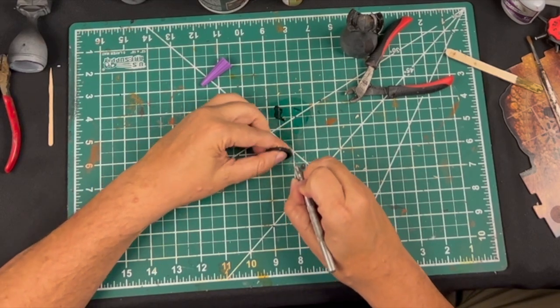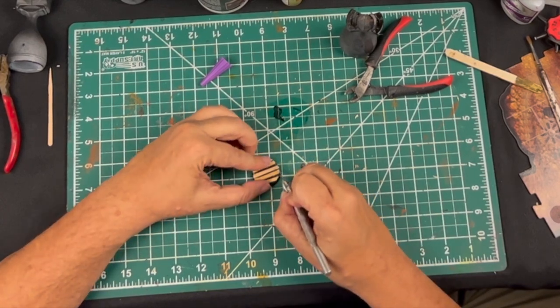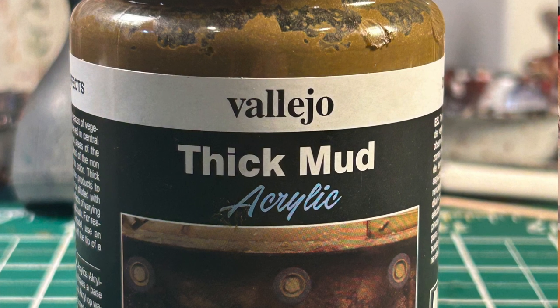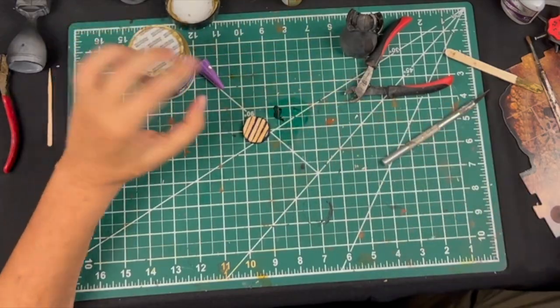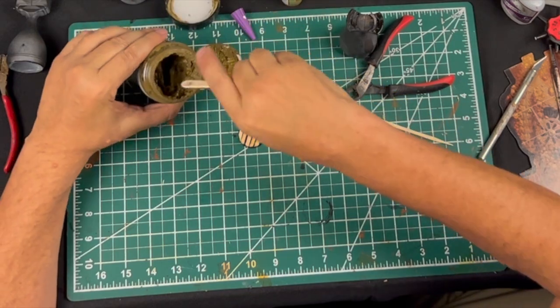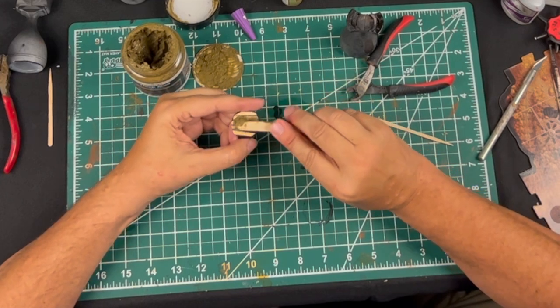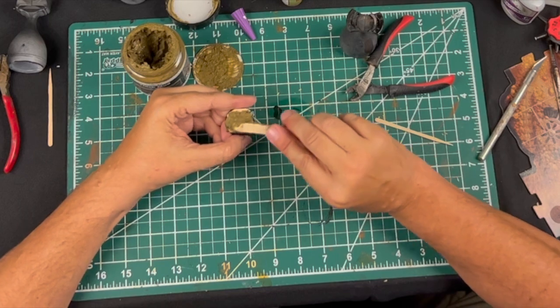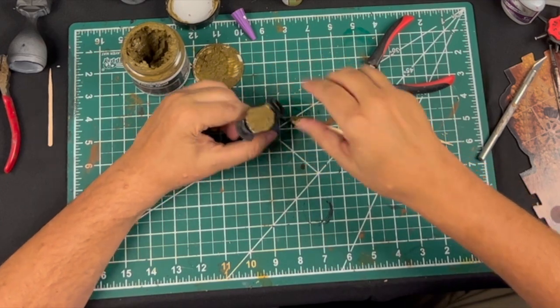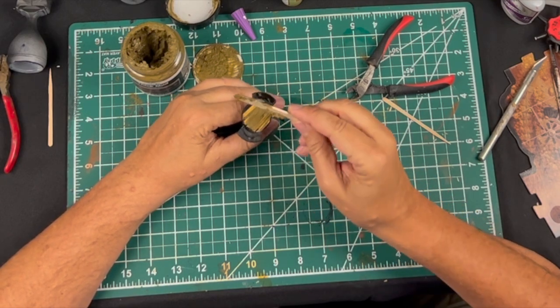There we have it. We have the basic shape of the boards. We're going to take some of this Vallejo Thick Mud and spread it on using a Popsicle stick so it gets in all the cracks. Put it down into the cracks and then scrape it off.